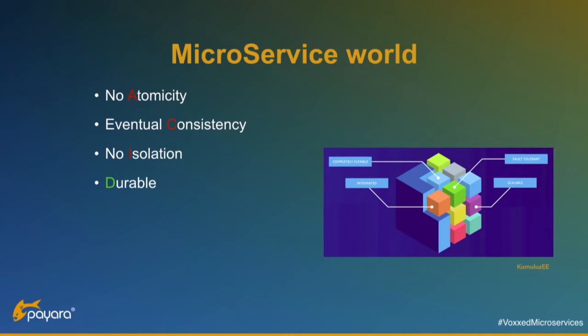In the microservice world, you do not have atomicity — you only have eventual consistency — and you do not have isolation, which is also important. For instance, if you're using the data for other reasons like data warehousing or reporting, and you've already saved some data that might be reverted later, then what is the actual state of your data? That is an issue, but not one we're going to solve in this session.